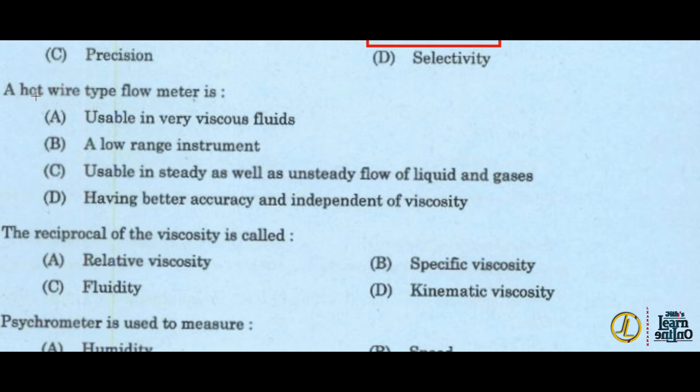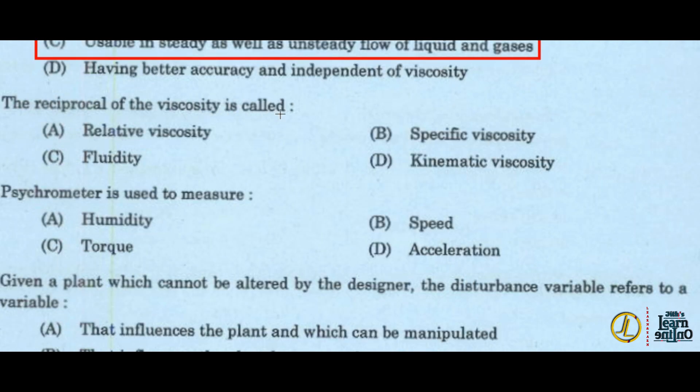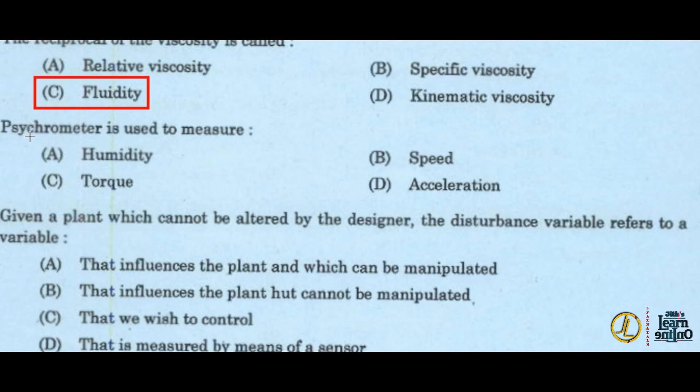A hot wire type flow meter is option C, usable in steady as well as unsteady flow of liquid and gases. The reciprocal of the viscosity is called fluidity. Next, psychrometer is used to measure humidity.